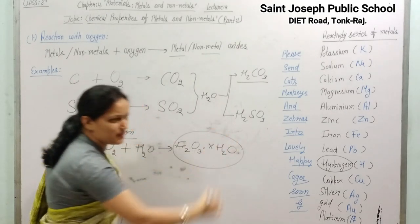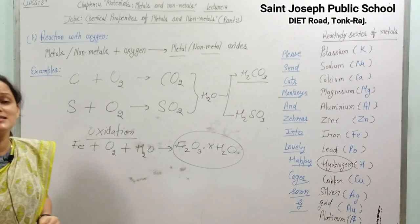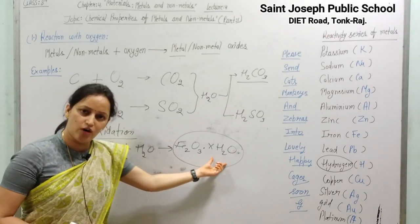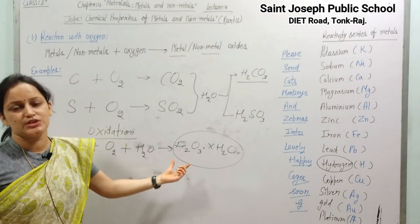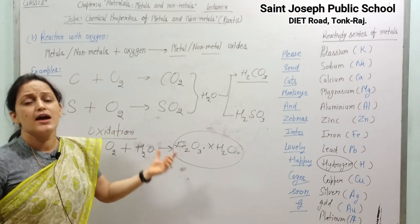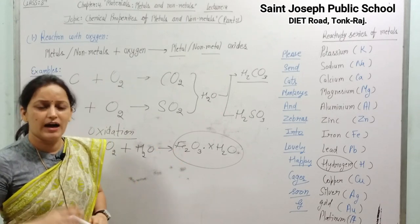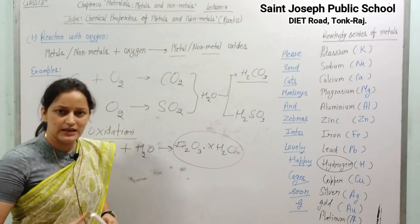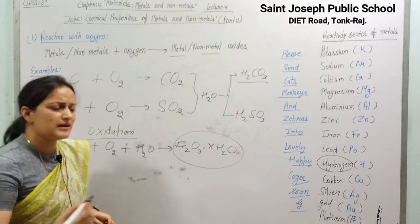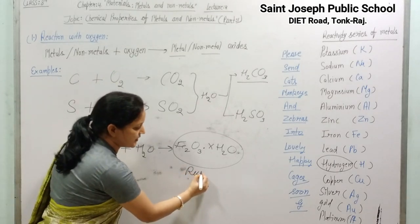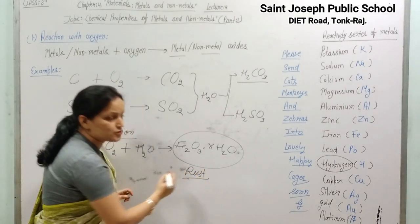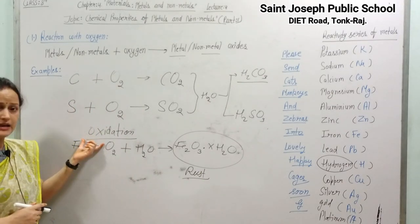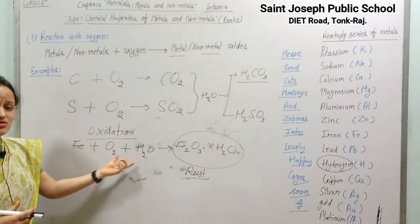When iron undergoes this reaction, it forms Fe₂O₃·xH₂O. This is called hydrated ferric oxide — water is involved, so the term 'hydrated' is used. Fe₂O₃ is ferric oxide; its full chemical name is hydrated ferric oxide, which in common language we call rust.